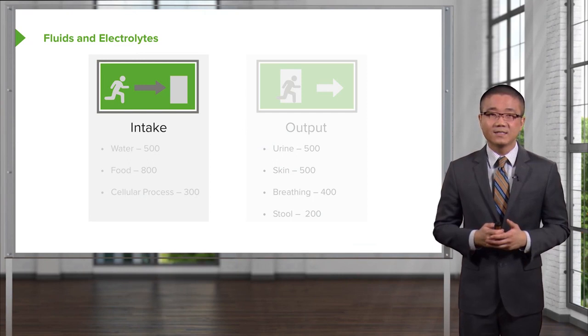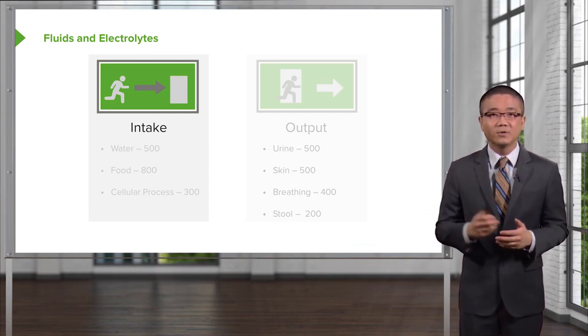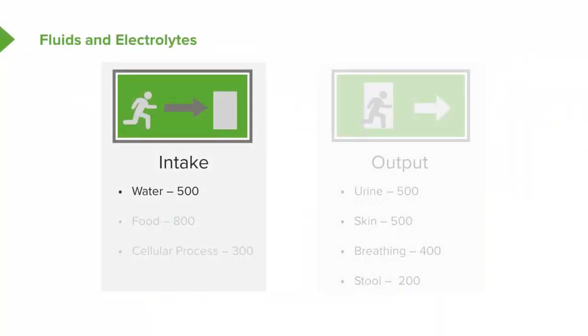Our bodies do an amazing job of maintaining intake and output homeostasis. On a daily basis, we approximately ingest 500 cc, or potentially excess depending on how much water you drink. In our food, we probably take in about 800 cc of fluid. And normal cellular processes contribute about 300 cc.